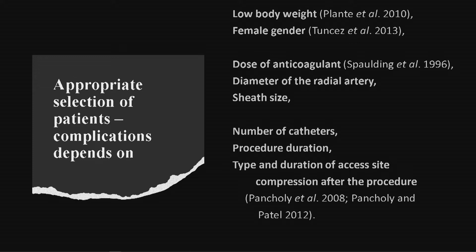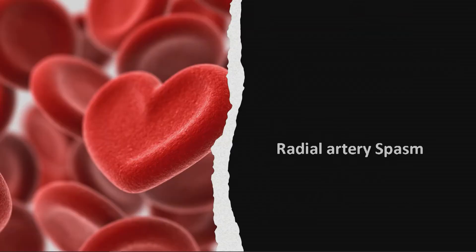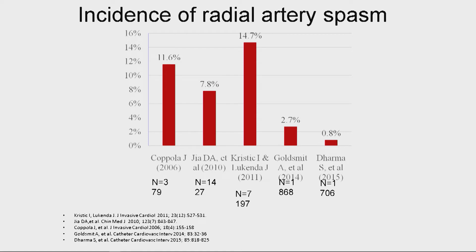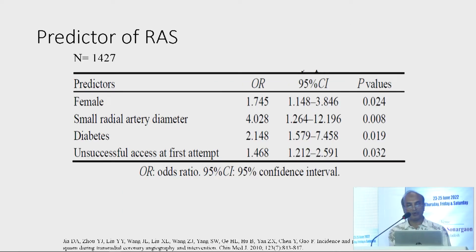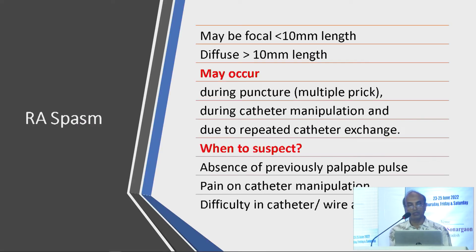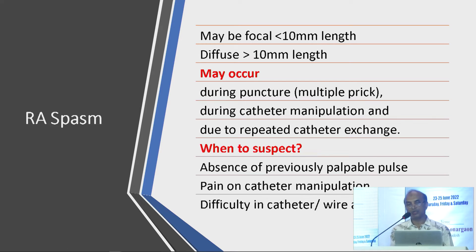The compression of the radial artery after the procedure — the time of compression is very important. Radial artery spasm frequency varies from 0.8% to up to 14%. The predictors are female gender, small radial artery, diabetes, and first attempt failure — unsuccessful access at the first attempt is one of the predictors. It may be focal or diffuse, and may occur during puncture, catheter manipulation, or due to repeated catheter exchange.